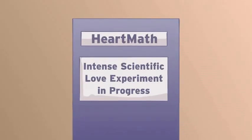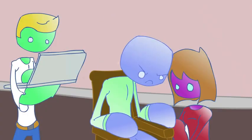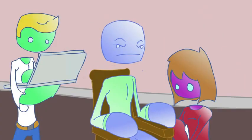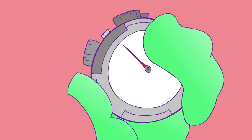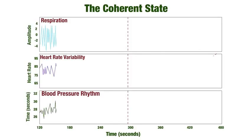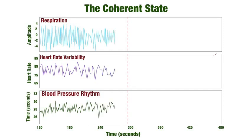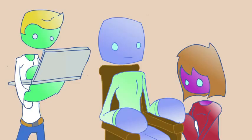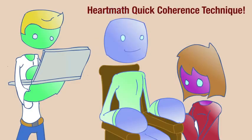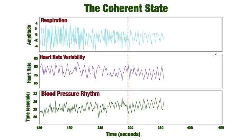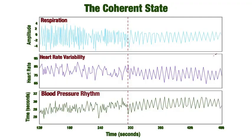In an experiment done at the Institute, they hooked up scanners to an individual who was subjected to very chaotic emotions. For 300 seconds, they measured the respiration, heart rate variability, and blood pressure rhythm. After this time, the individual on the scanners did a technique on himself, which they have dubbed the HeartMath Quick Coherence Technique, which activated a feeling of love and appreciation. Instantly, all three of the rhythms came into entrainment and harmony with each other and stayed in harmony for the remainder of the experiment.